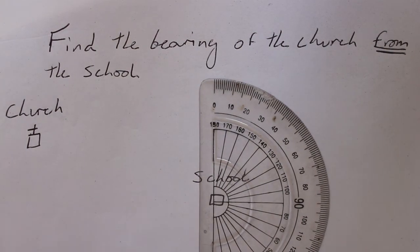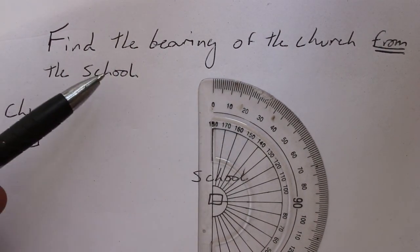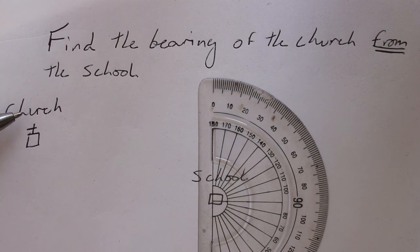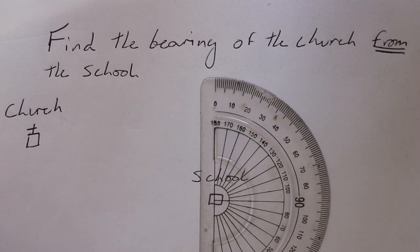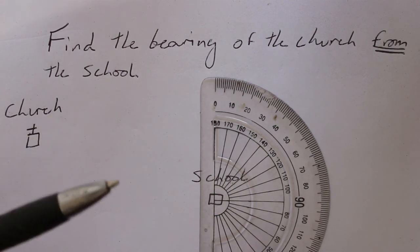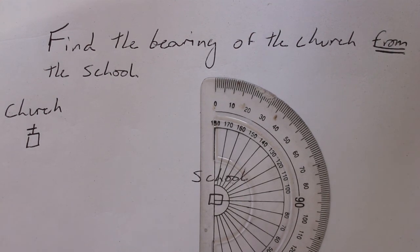Okay, so we are going to try to find the bearing of the church from the school. So the church is here and the school is here. Okay, so we line out our protractor correctly, but you realize that it only goes to 180 degrees. Now if you realize, you add 180 to 180, you will get 360. So how do we accomplish this?